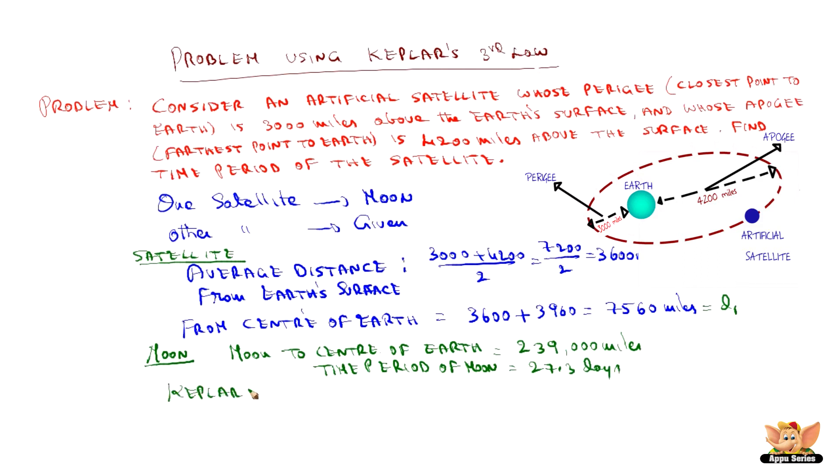Using Kepler's third law, satellite's time period, square of satellite time period and square of moon's time period ratio is ds cube, that is satellite's distance from the center of the earth and dm cube, that is moon's distance from the center of the earth. So, by calculating this,